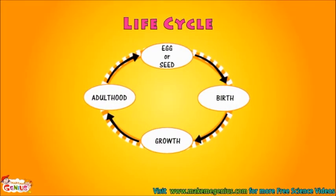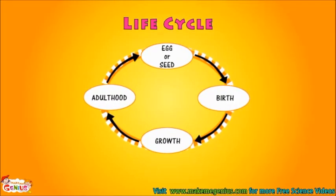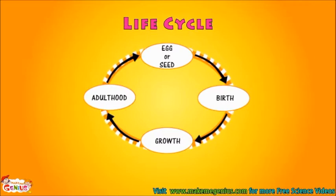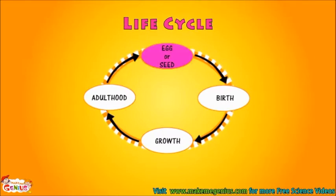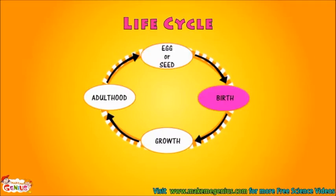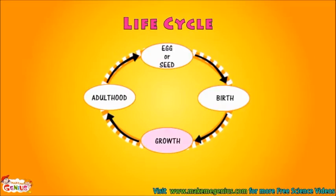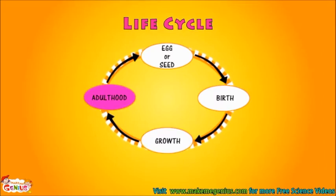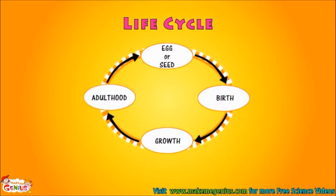Look at this picture. It shows a simple life cycle. All living species keep changing throughout their life. It starts from an egg or seed. They take birth, they grow up, then they become adults, and they reproduce at this stage.